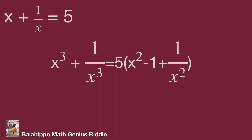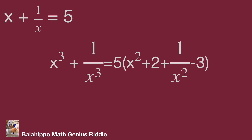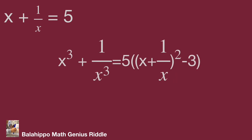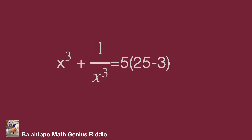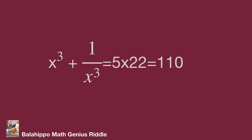Next, to generate the quantity (x plus 1 over x) squared, adjust the right side of the equation as 5 times bracket x squared plus 2 plus 1 over x squared minus 3 bracket. Since x squared plus 2 plus 1 over x squared equals (x plus 1 over x) squared, substitute x plus 1 over x with 5: x cubed plus 1 over x cubed equals 5 times (25 minus 3), which gives the final answer of 110.